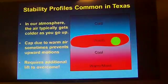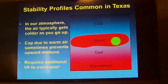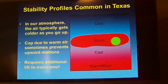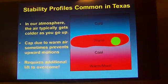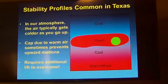To punch through that warmer layer, it requires us either to cool that inversion layer or increase the instability — the temperature — below it. It requires additional heating below it, cooling of the warm layer, or a stronger forcing mechanism: a stronger front or disturbance within the atmosphere to provide lift.